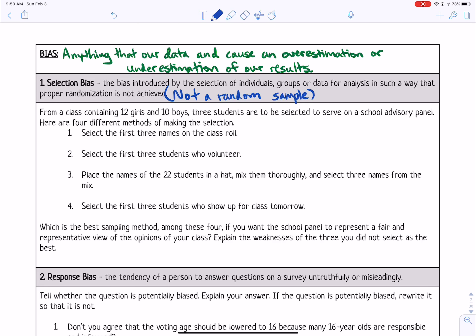Which is the best sampling method among these four if you want the school panel to represent a fair and representative view of the opinions of your class? Explain the weaknesses of the three you did not select as the best. Alright, so definitely option three would be the best.